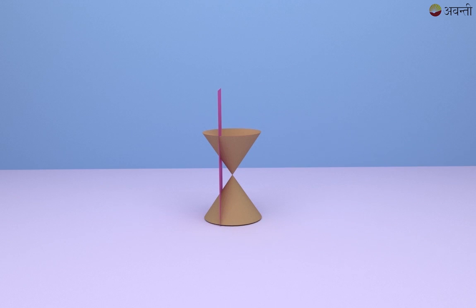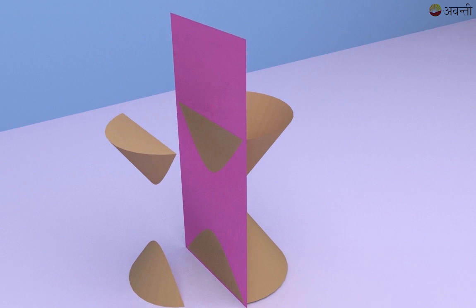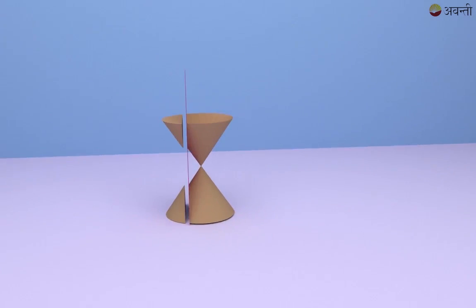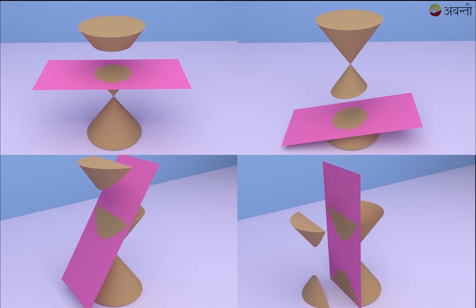Now in the fourth situation, I have increased the angle even further. Now in this situation, when I cut my double cone, you can see that both my cones are now giving me two independent shapes and both of these together are called a hyperbola. So what we saw here was, we can get four different shapes by the same double cone when we cut it at four different angles and that is why all these four shapes are collectively called the conic sections.